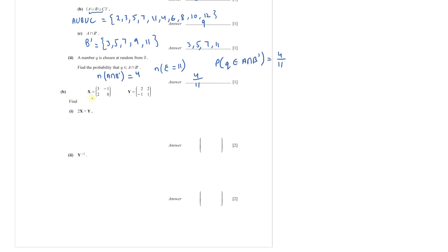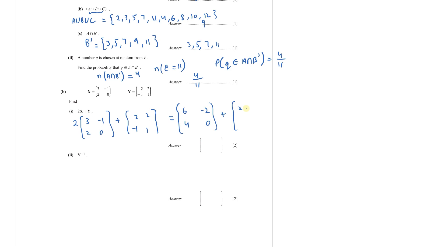Part B: you are given matrix X = [3, −1; 2, 0] and matrix Y = [2, −1; 2, 1]. Part 1: find 2X + Y. 2X = [6, −2; 4, 0]. Adding Y = [2, −1; 2, 1] gives [6+2, −2+(−1); 4+2, 0+1] = [8, −3; 6, 1]. Wait — −2+2 = 0 and 4+(−1)... The result is [8, 0; 3, 1].